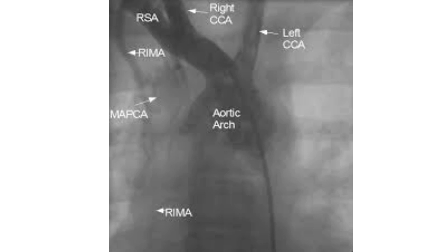A still frame from an angiogram with radio-contrast dye injected using a pigtail catheter kept in the right brachiocephalic artery shows a major aortopulmonary collateral artery arising from the right internal mammary artery. MAPCA are seen in severe forms of Tetralogy of Fallot and pulmonary atresia. When the lungs are supplied by multiple MAPCAs, they are unifocalised prior to definitive surgical repair. Connecting the distal end of MAPCAs to a single vessel is known as unifocalisation. Collaterals to the pulmonary arterial branches can also arise from the bronchial arteries within the lungs, and hilar collaterals can also occur in pulmonary atresia.